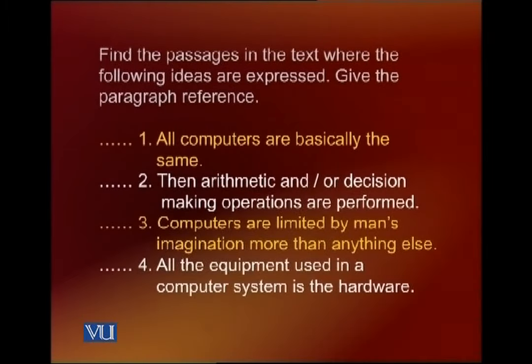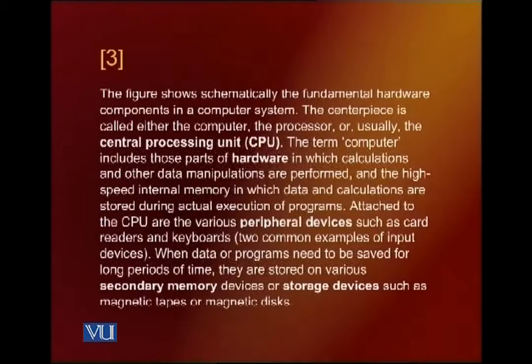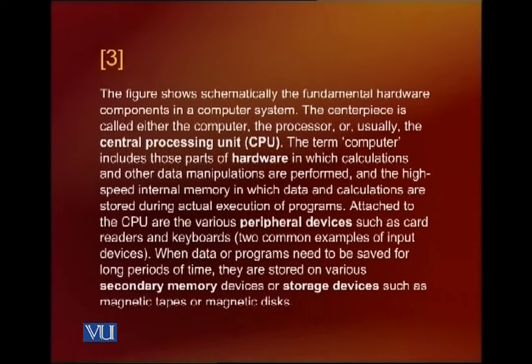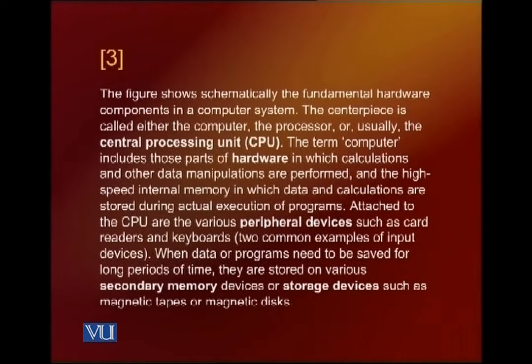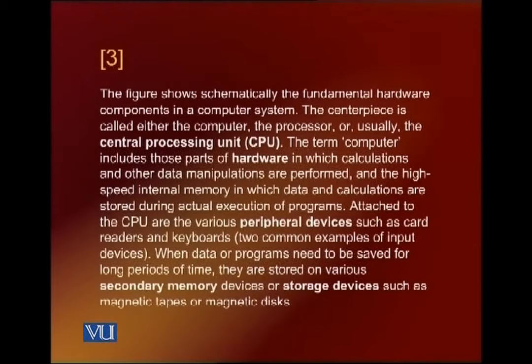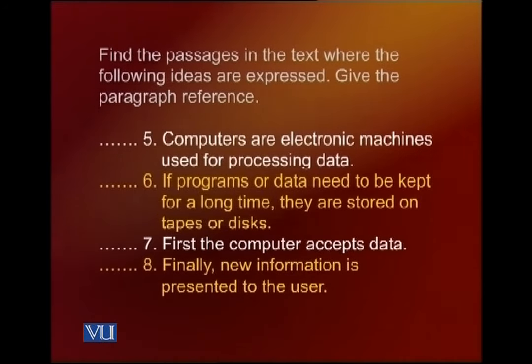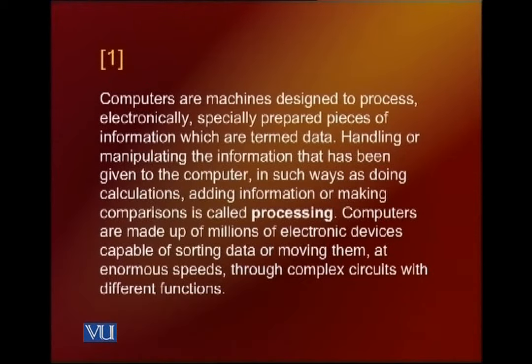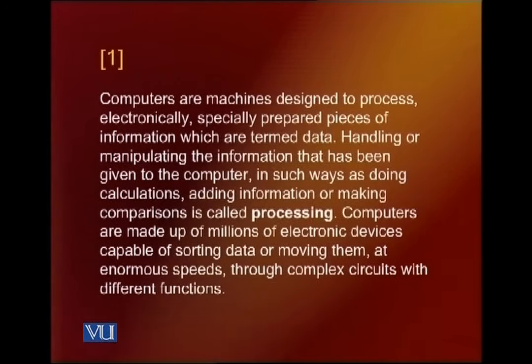Statement number four: all the equipment used in a computer system is the hardware. Where does this idea occur? Paragraph three. Statement number five: computers are electronic machines used for processing data. Where does this information lie? It lies in the first paragraph — right at the very beginning.